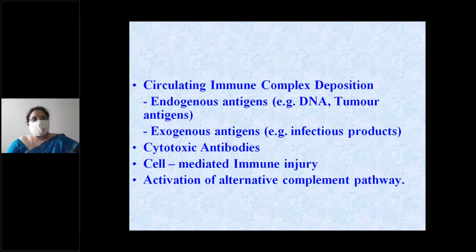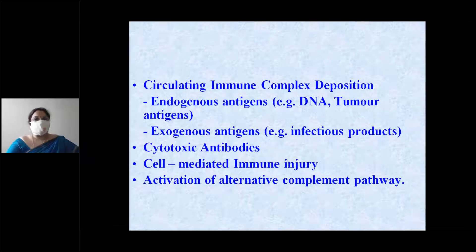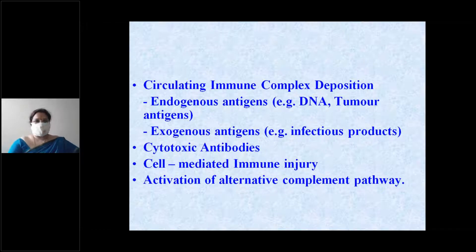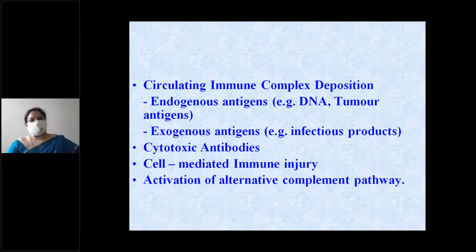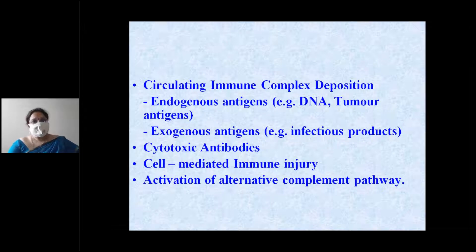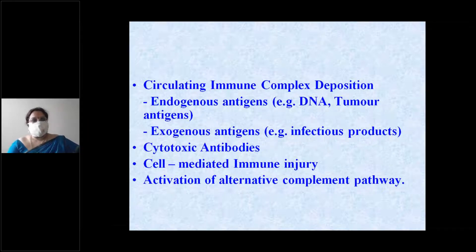Immune complexes within the circulation can cause injury to the glomeruli. These circulating immune complexes get deposited on the basement membrane and cause glomerular injury.